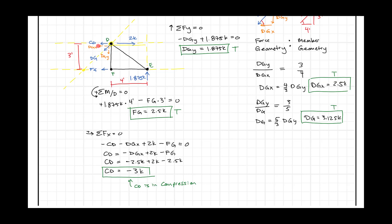You could also check by summing moments about point G to solve for CD. This is a great method because we can solve for just the forces we want. First we summed forces in Y to get the vertical component, then we summed moments about a point — that's where the strength of the method of sections really shows. Finally, we used our last equation of equilibrium to solve the whole problem. I hope that's helpful; feel free to leave a comment, and until next time, keep working hard, moving onward and upward.